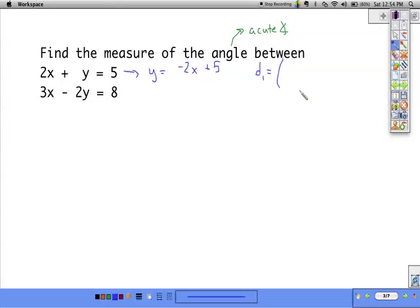The direction of that line, I'll call it d1, would be 1, negative 2. The slope, the rise over the run, the change of y over the change of x. So, change of x is 1, change of y is negative 2. That's the direction the line is going.